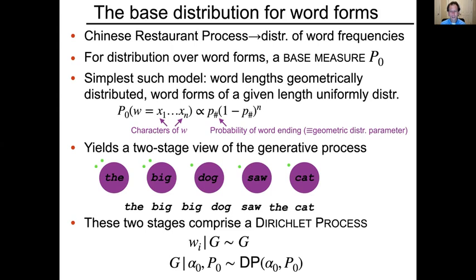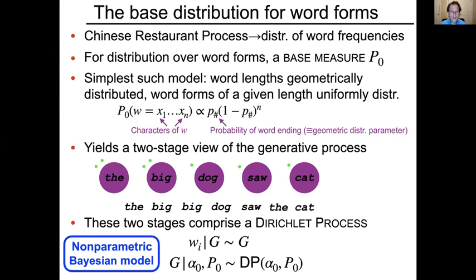These two stages comprise what is sometimes called a Dirichlet Process. The notation is that words conditioned on the generator G are distributed as G, and G itself is characterized by alpha-naught — which tells you how likely you are to sample new categories — and the base measure, which characterizes what instances actually look like. This is an example of a nonparametric Bayesian model. Nonparametric here means the model is unbounded in size: it implicitly represents an infinite set of parameters.